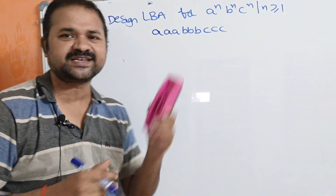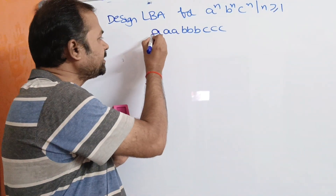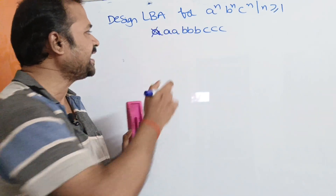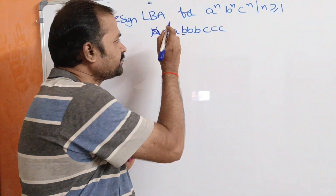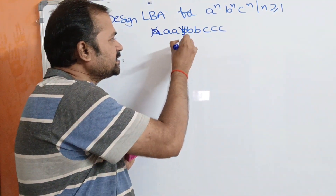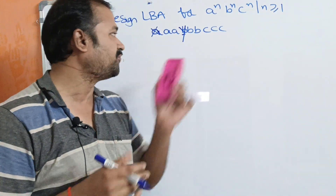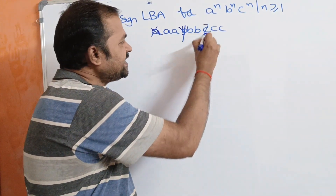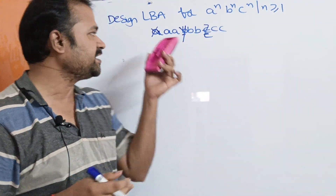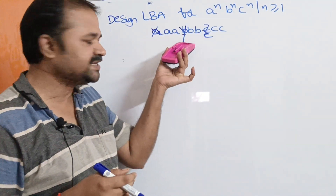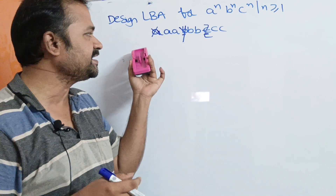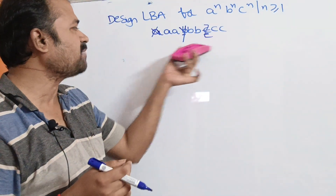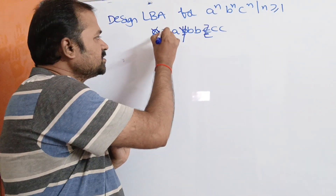The logic is very simple. If the input is A, then we have to replace A by X and move right till we get B. If the input is B, then replace the symbol by Y and move right till we get C. If we get C, then replace C by Z. Here X, Y, and Z are corresponding markers — Y corresponds to X, and Z corresponds to X and Y. Next, we have to move towards the left till we get A.